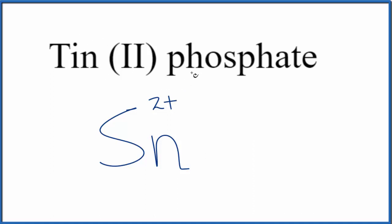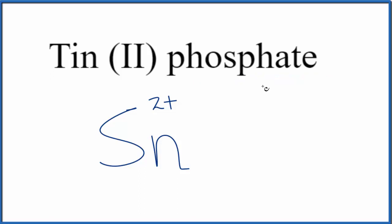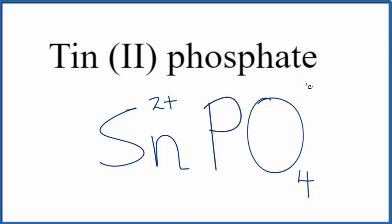Tin is a transition metal. Phosphate you're not going to find on the periodic table. You have to either memorize that the phosphate ion is PO4 and the whole ion has a charge of 3 minus, or if you're allowed, you can look this up on a table of polyatomic ions. So we have tin, a transition metal, and then we have a polyatomic ion — a group of non-metals.